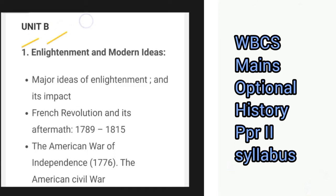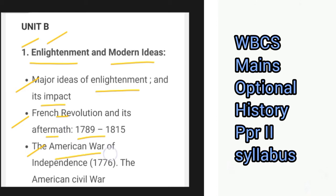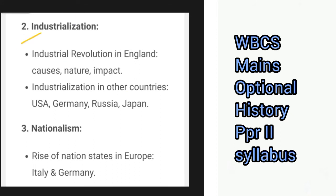Moving over to unit B, the syllabus covers enlightenment and modern ideas — major ideas of the Enlightenment and its impact — the French Revolution and its aftermath from 1789 to 1815, the American War of Independence, the American Civil War. Then there is a section on industrialization: the industrial revolution in England — causes, nature and impact — industrialization in other countries including USA, Germany, Russia and Japan. Then a section on nationalism covers the rise of nation-states in Europe, specifically Italy and Germany.